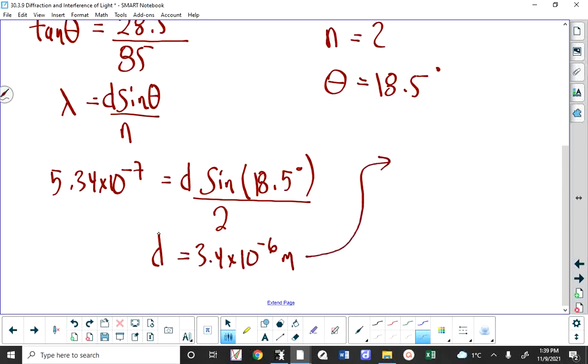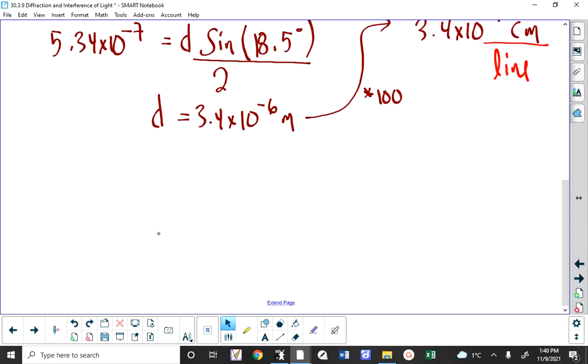My recommendation is to convert it to centimeters first before you take the reciprocal. If you want to know how many lines per centimeter it is, let's find centimeters first. Sienna, do you have a question? You sure? Okay, just checking. So I would convert it to centimeters first. There's more centimeters in a distance than there is meters, so we would multiply by 100 and get 3.4 times 10 to the negative 4 centimeters. And this is really centimeters per line, which means between lines.